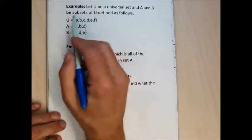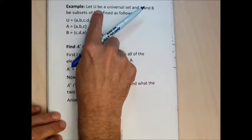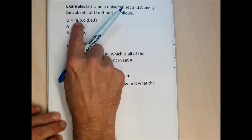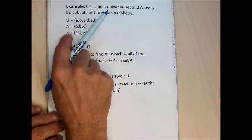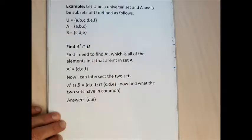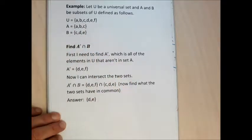I made up a new universal set for this next example. The universal set has the letters A, B, C, D, and F. I made subset A and subset B, just made them up randomly. I don't know why they both have 3 elements, but they do — A could have 1 element and B could have 5 elements, it doesn't matter.